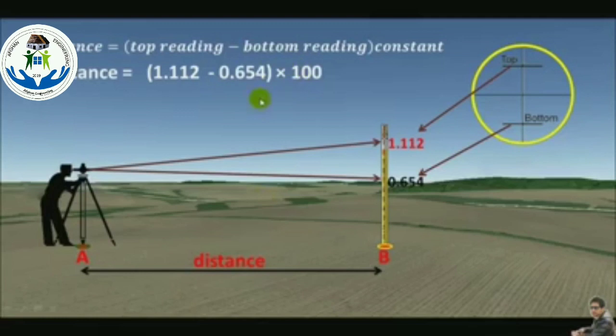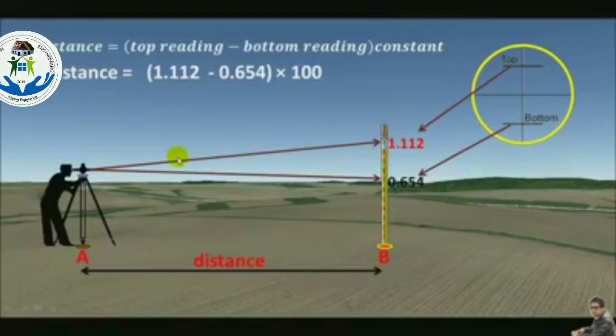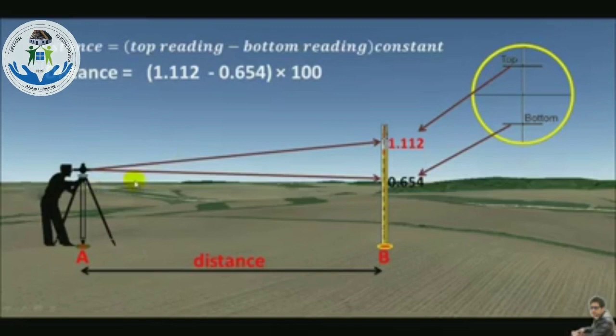But how can we get this constant? Or where do these constants come from? Remember when you buy a new thing, there is always a manual with it. Similarly, when you buy a new leveling machine, there is always a manual with it. So the constant can be found in that manual.